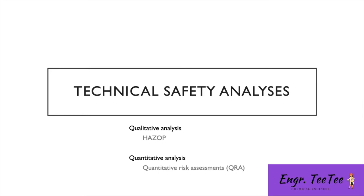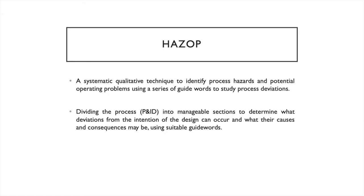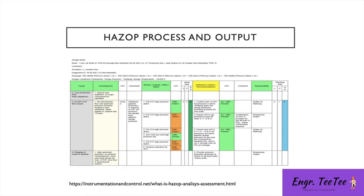For qualitative analysis, the HAZOP — Hazard and Operability Study — is a systematic qualitative technique used to identify process hazards and potential operating problems using a series of guide words to study process deviations. We divide the process, typically the piping and instrumentation diagram, into manageable sections called nodes, determine how each section works, and examine what deviations from design intent can occur, their causes, and consequences.